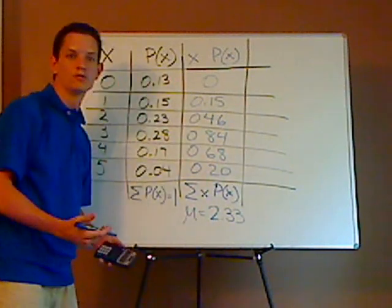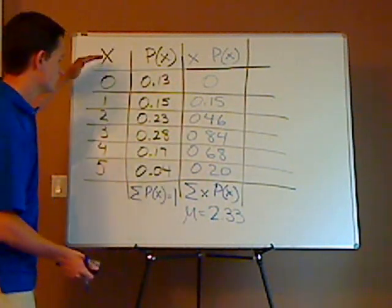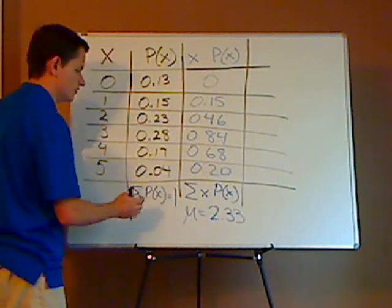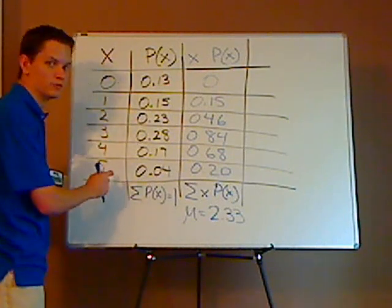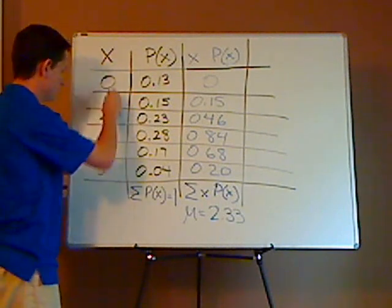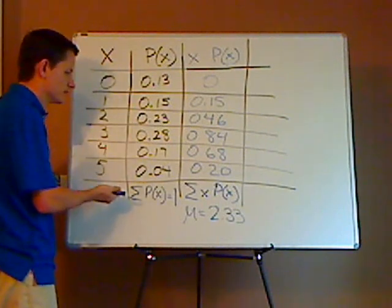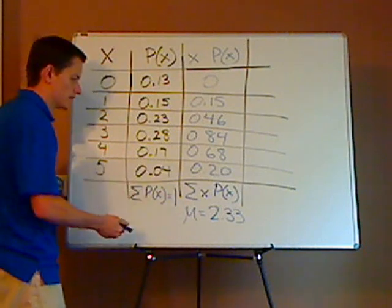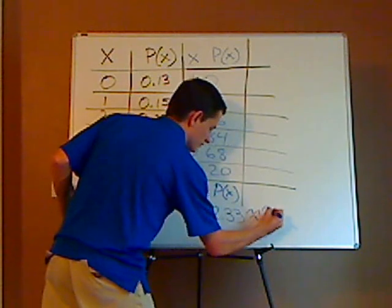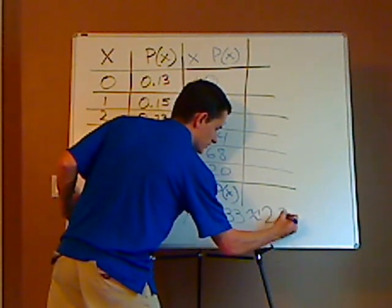Now a nice rule of thumb is when you're finding the mean or even standard deviation, what you do is go to one more decimal place than your discrete variable. So here, there are no decimal places, so it would just be one decimal place. So your mean would be approximately 2.3.